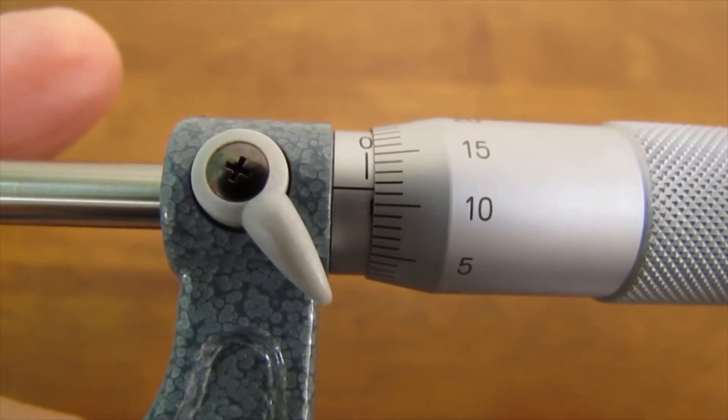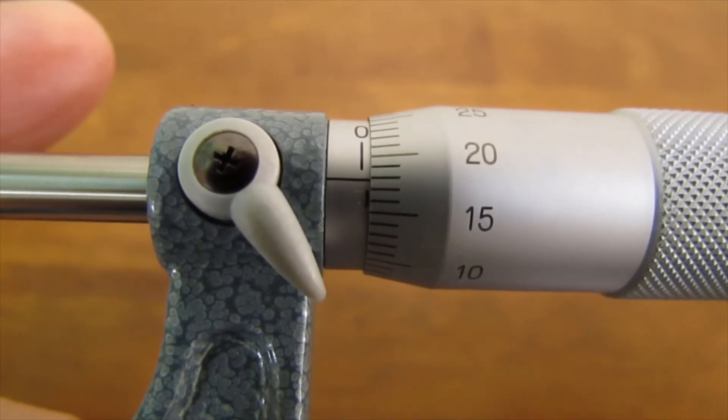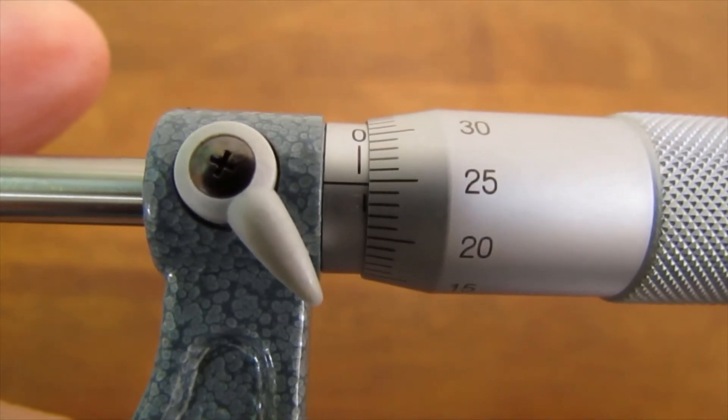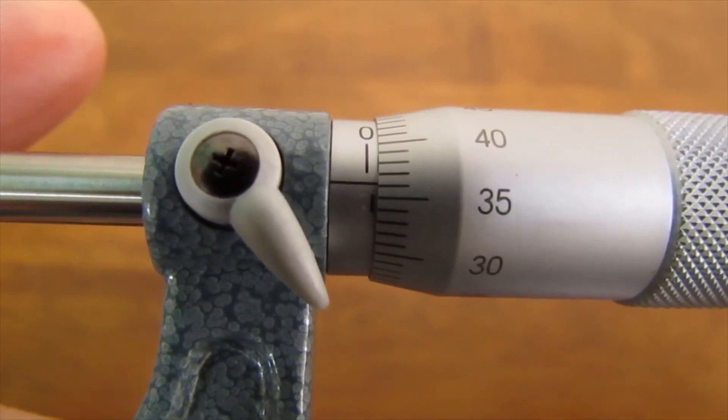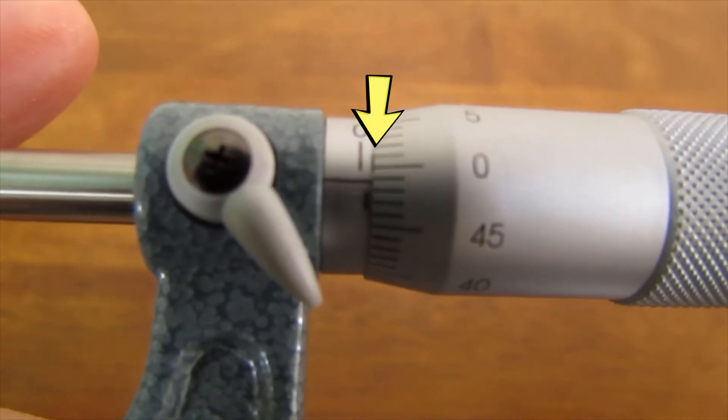If I spin it around another complete turn like so, I've now spun it around twice. This is now opened up by one millimeter. And if you look carefully enough, you'll see the one millimeter line division.